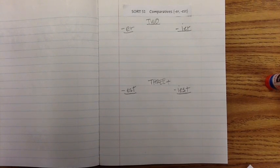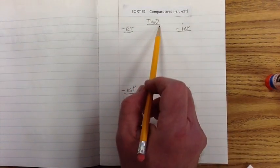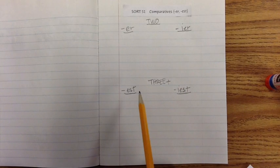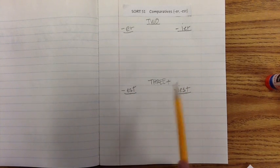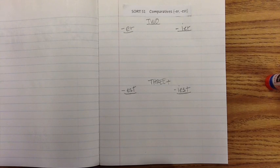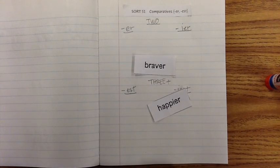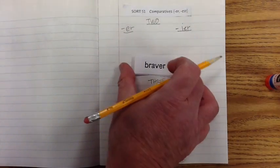So once again, ER and IER, we're comparing how many things? Two. And when we're comparing three or more items or things, we're going to use EST or IEST. Let's go ahead and bring in some of our word chips and see which exemplars they'll fall under. Which ones are we going to fit under?